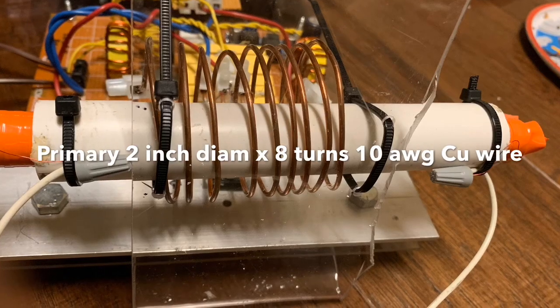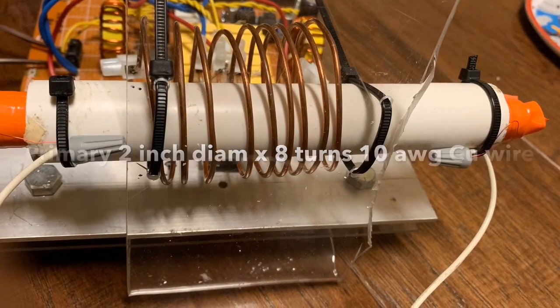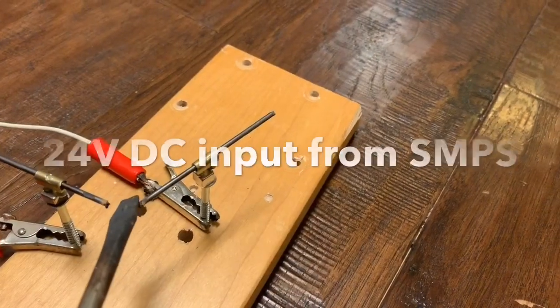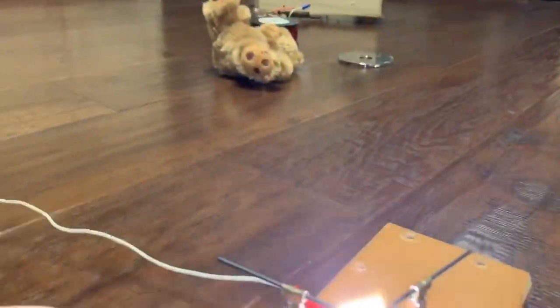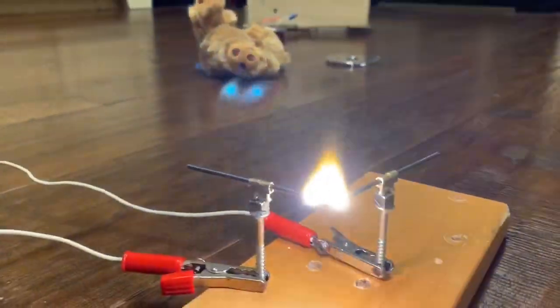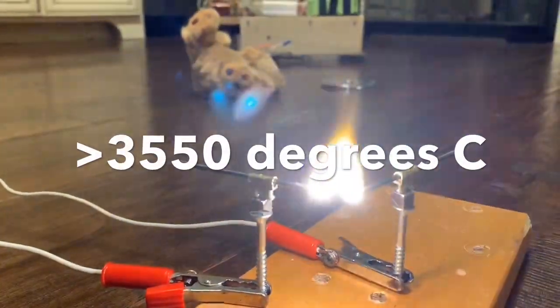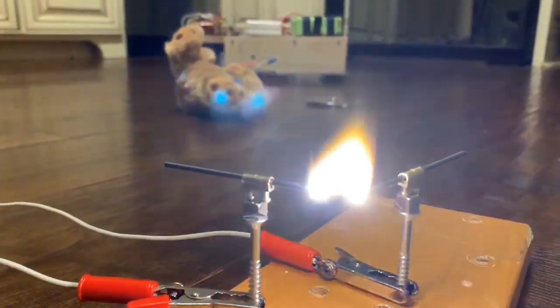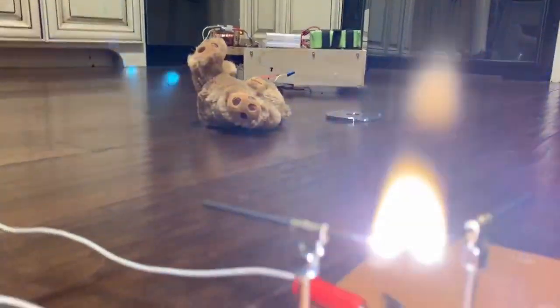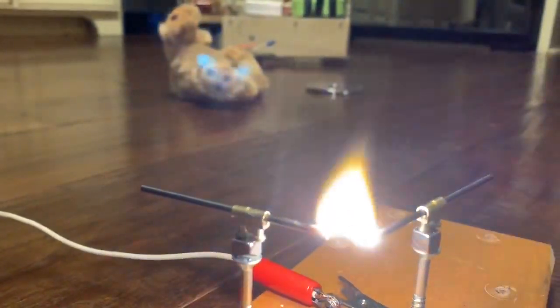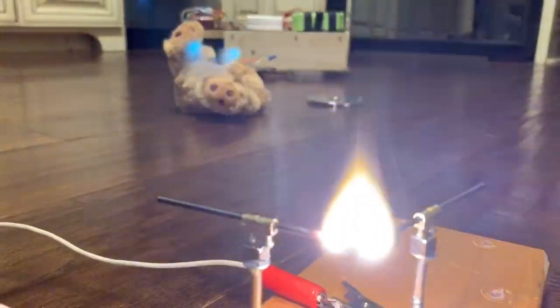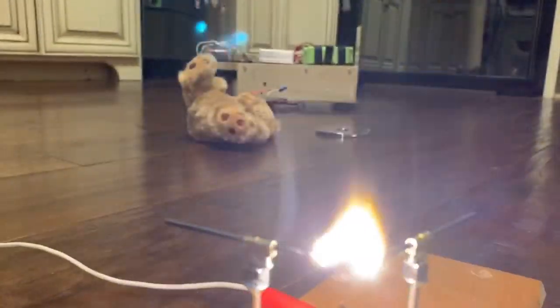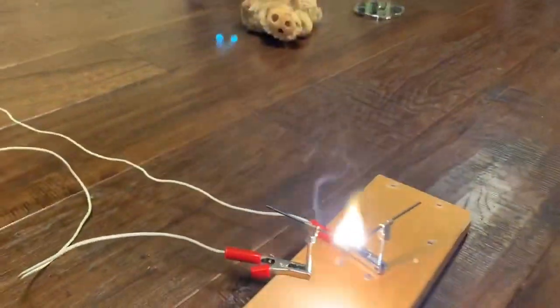The primary is two inch diameter, eight turns of 10 gauge copper wire. As you can see, you get a really hot plasma flame. This is near to 4,000 degrees centigrade and will actually melt carbon.